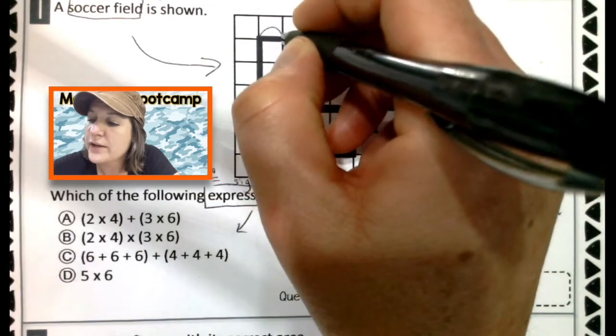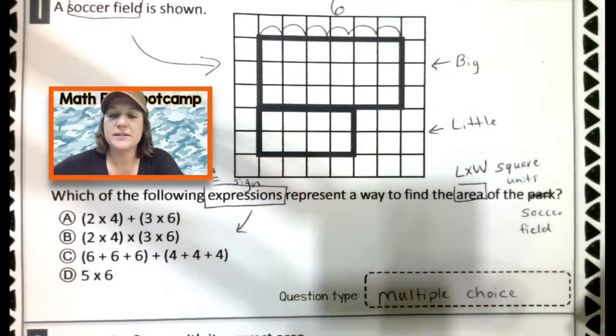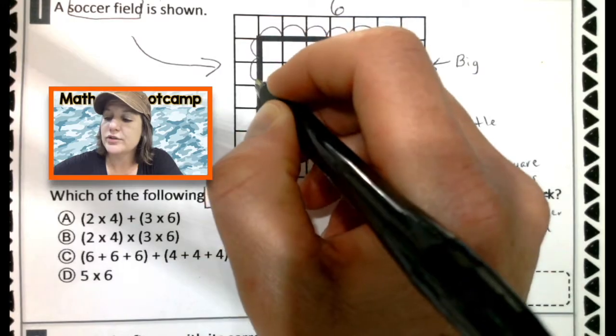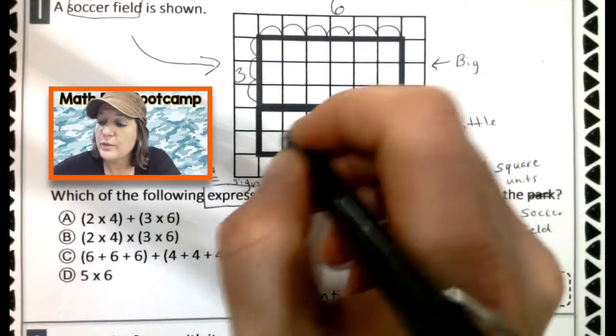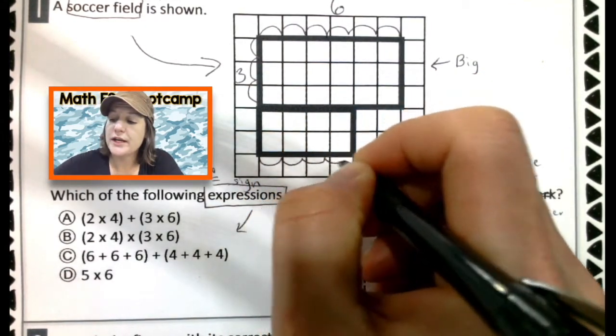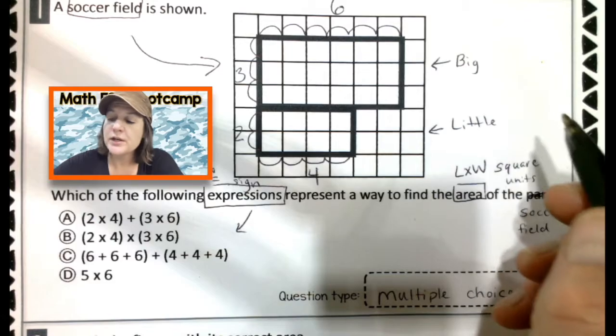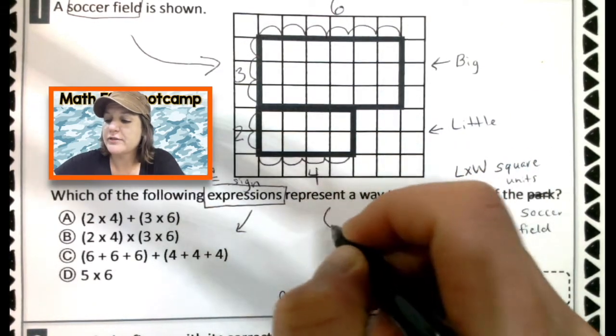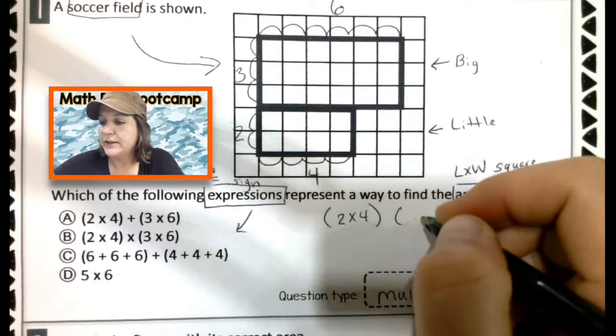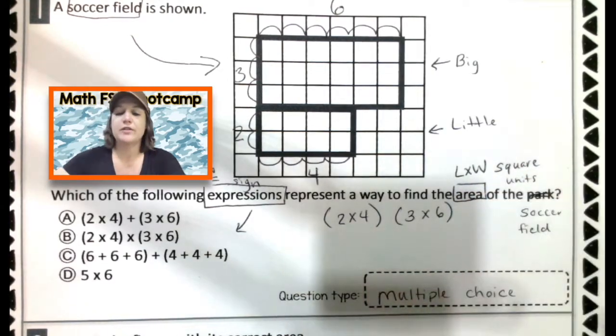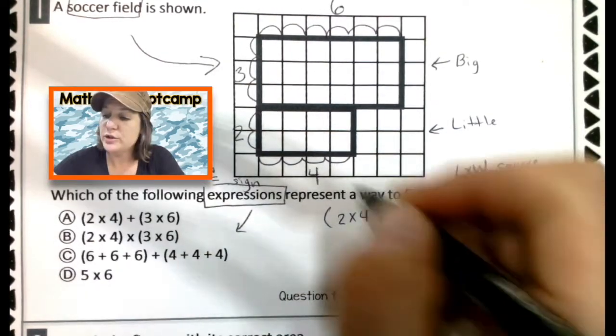So the length of the first one would be one, two, three, four, five, six units, six. And the width would be one, two, three units. And for the little part of our soccer field, we have a length of one, two, three, four units and a width of one, two units. Okay. So essentially what we would have to do is multiply those. We should have something like two times four for the little one and three times six for the big one. And when we have the two areas, we then combine them together by adding them.